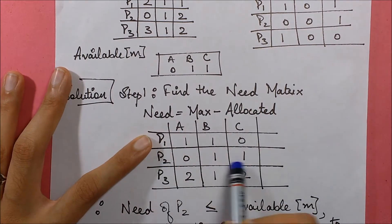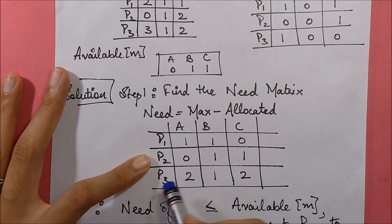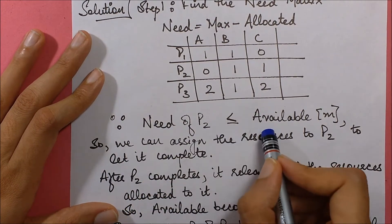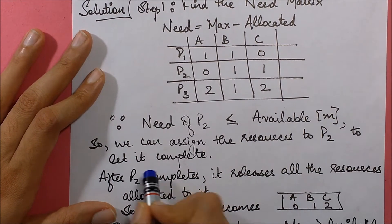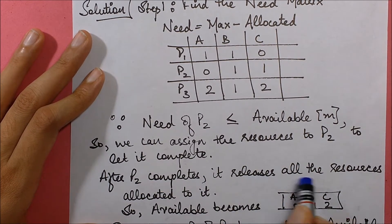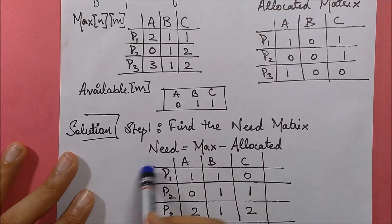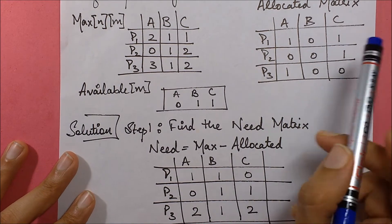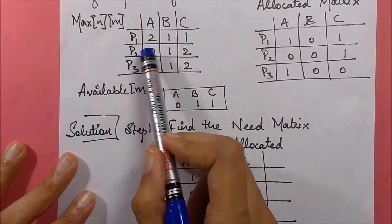Looking at our available resources, we can see that P2's need is less than or equal to the available. So we start with P2. We assign resources to P2 and let it complete. After P2 completes, it releases all the resources allocated to it — the ones specified in its maximum allocation — which is [0, 1, 2].